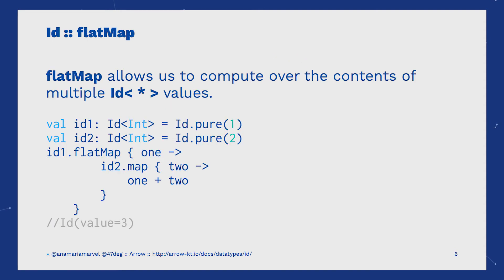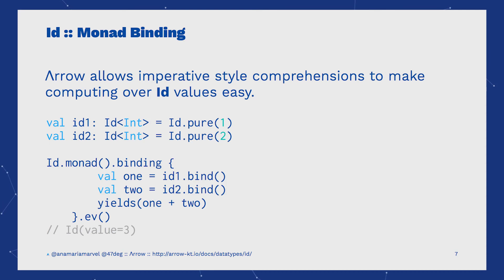When we have multiple ID values and we want to compute with the possibility that they will be fulfilled, we can use flatMap. FlatMap allows us to combine two ID values and, with their result, produce a new result. Monad comprehensions delegate to flatMap.